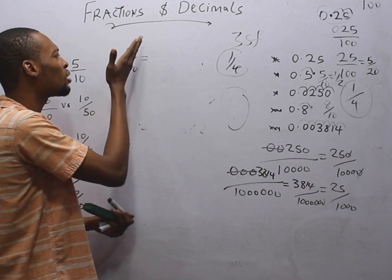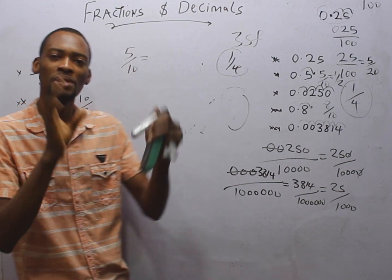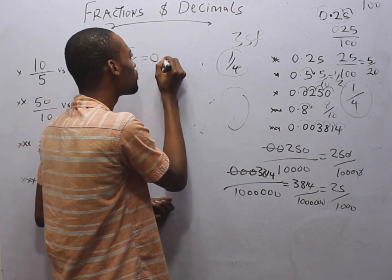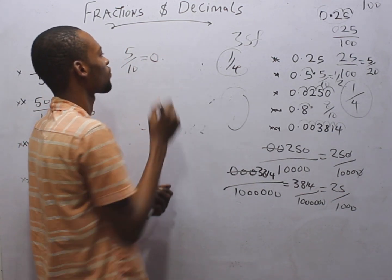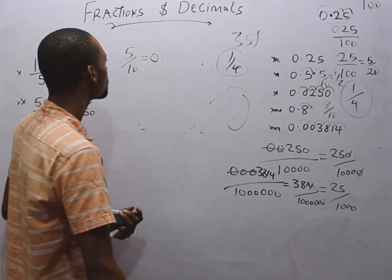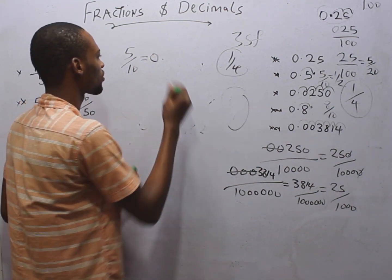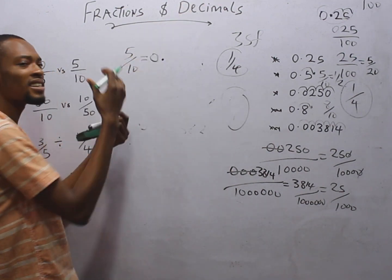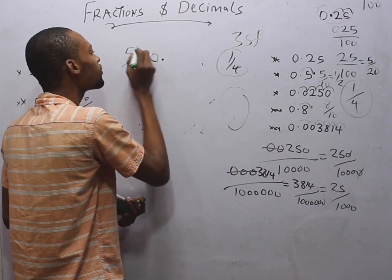5 over 10, right? Simply say equals. We know that 10 is bigger than 5. So since the number at the top is smaller, there will certainly be 0.